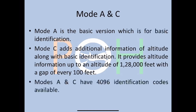Mode A is the basic version giving just the aircraft's identification call sign. Mode C adds altitude information, providing data up to 128,000 feet in increments of every 100 feet. Mode A and C together have 4,096 identification codes available. A squawk code is assigned to each aircraft and entered into the panel.